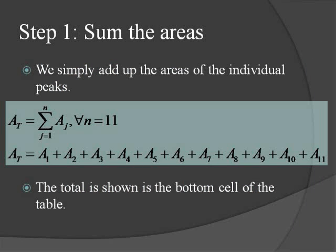Our data reduction process consists of two steps. In the first step, we sum up the areas of all of the peaks. You'll see here an algebraic form of the summation expression, and an explicit form, an arithmetical form of the summation expression. You will notice in the next slide that the total area is shown in the bottom cell of the table.